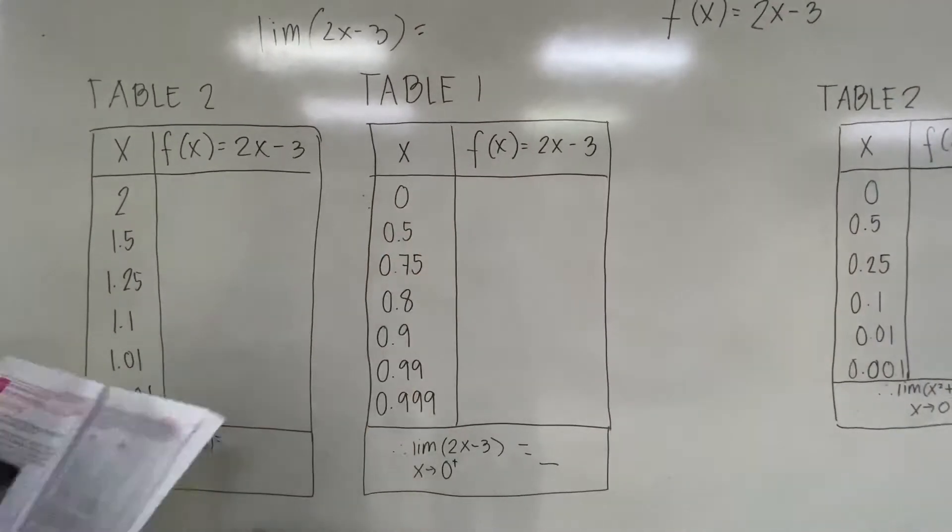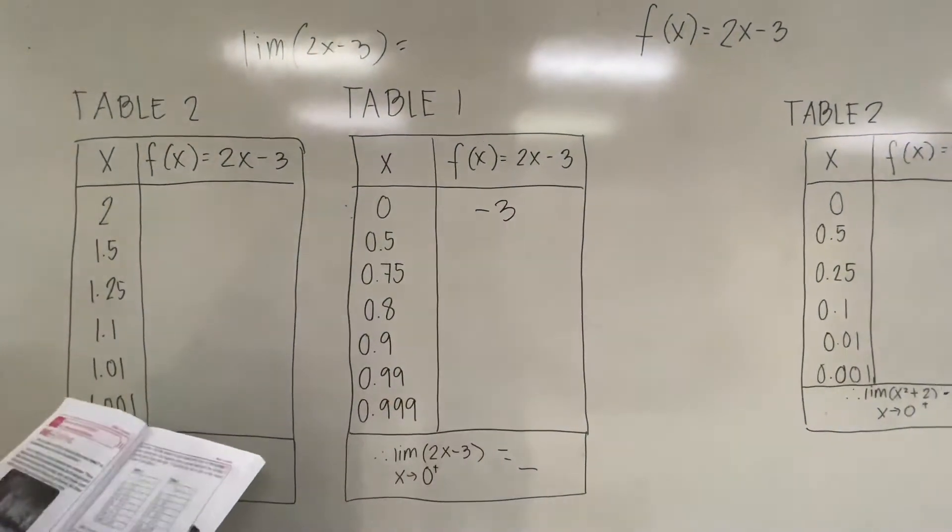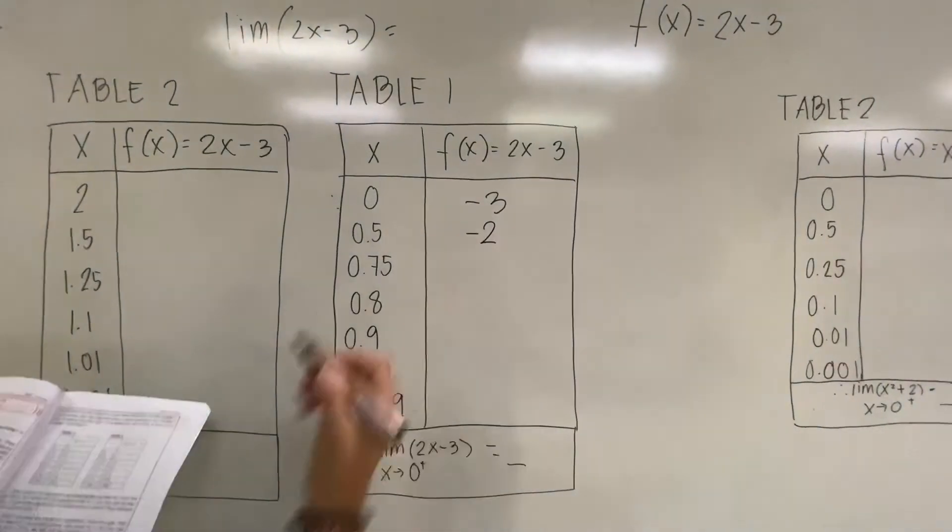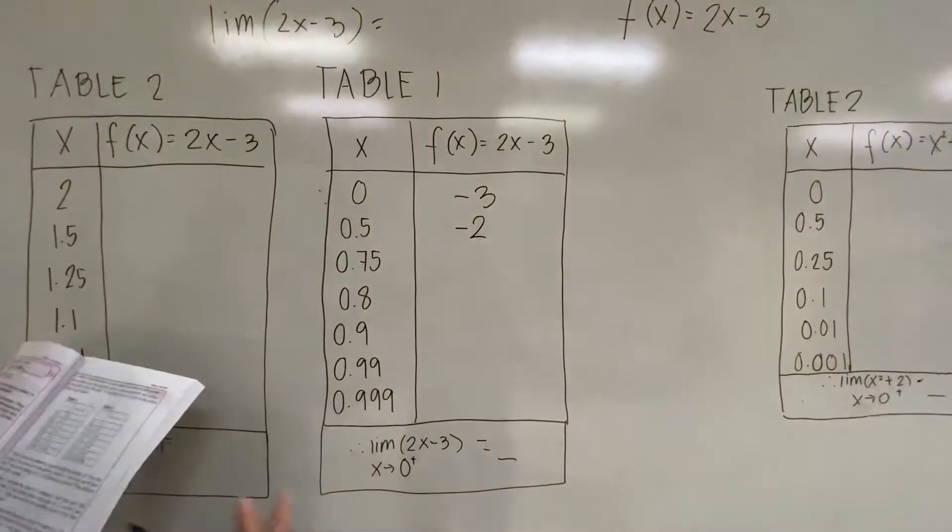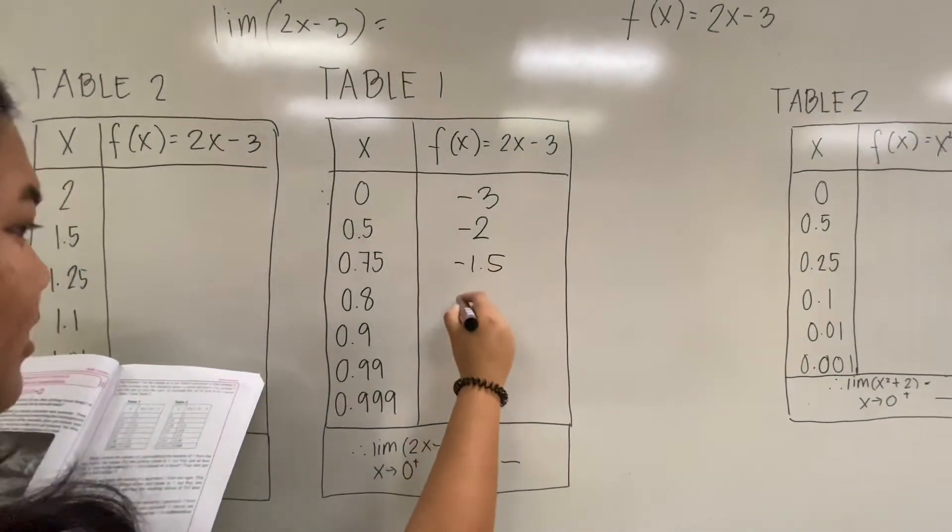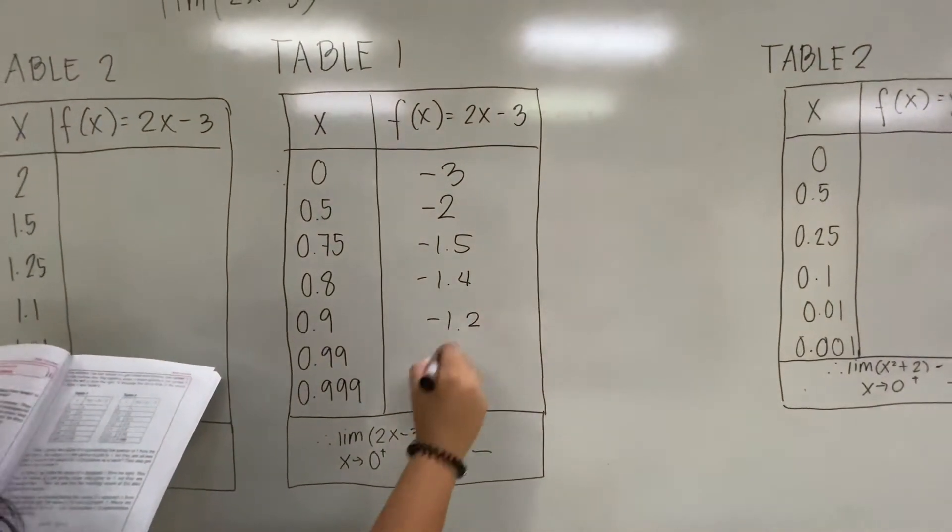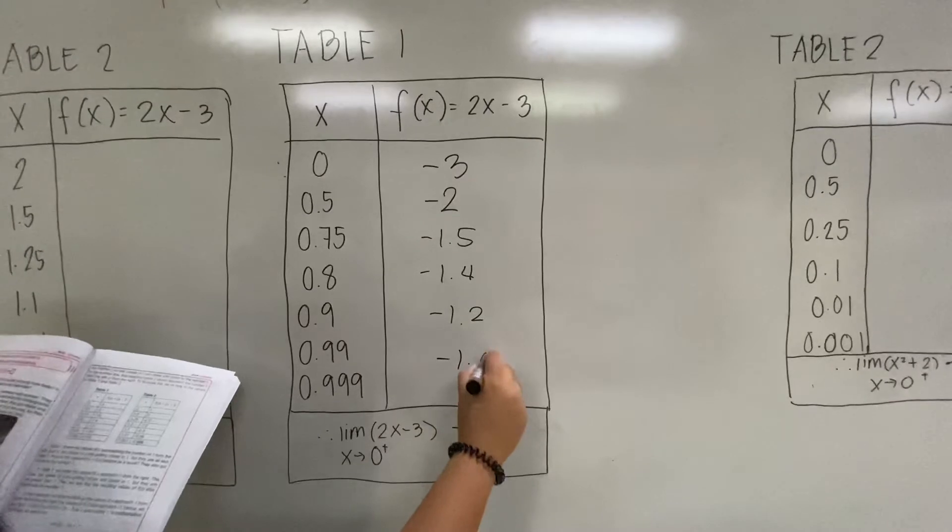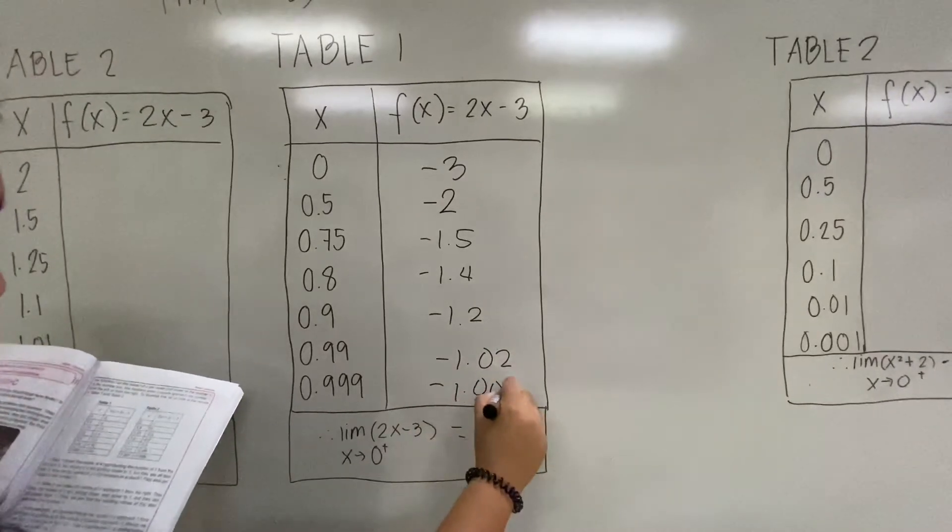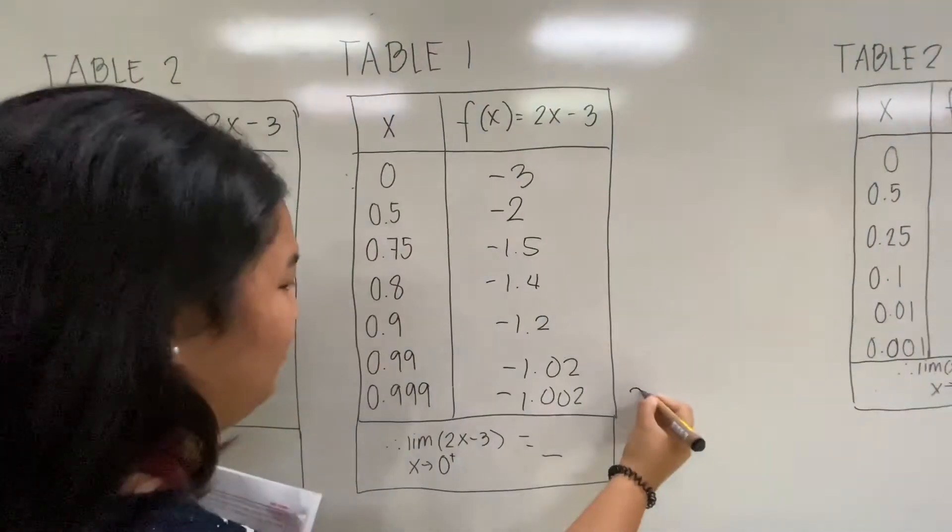0.5 and 2x - 3, you get -2. And so on and so forth: -1.5, -1.4, -1.2, -1.02, and -1.002. Notice that they get closer to -1.